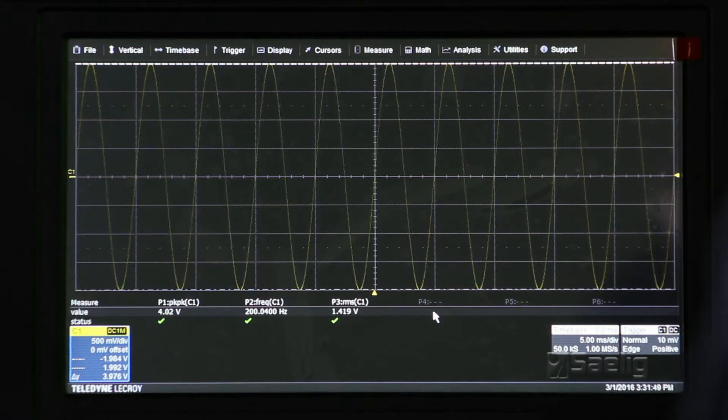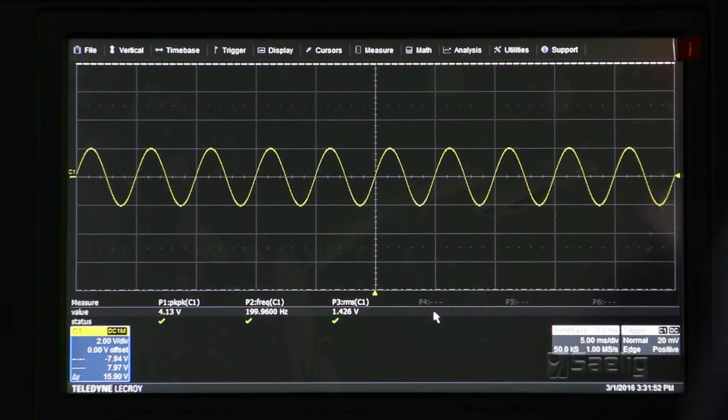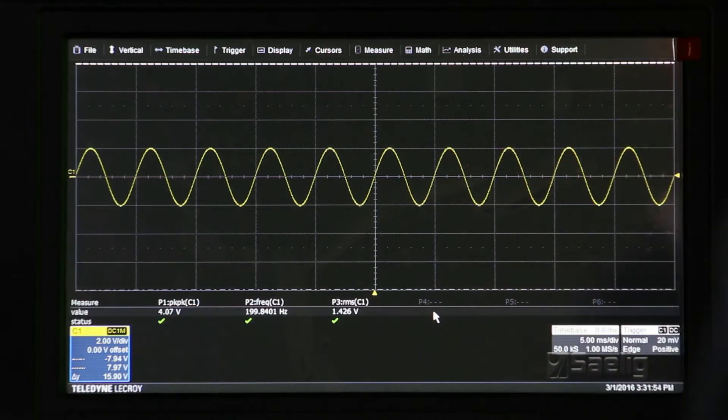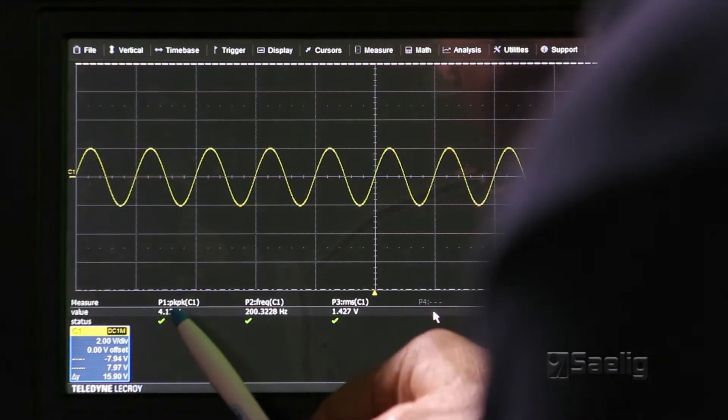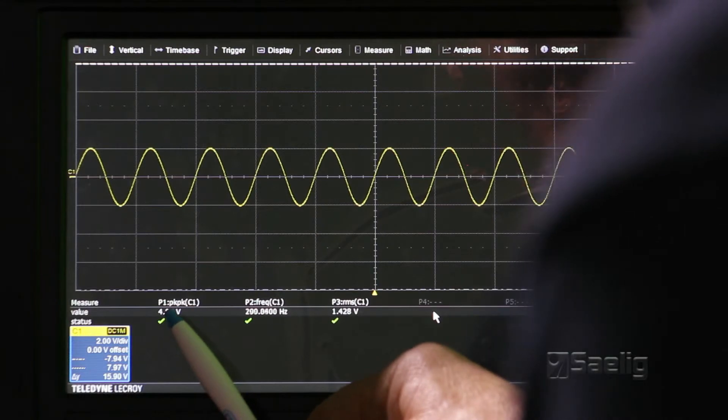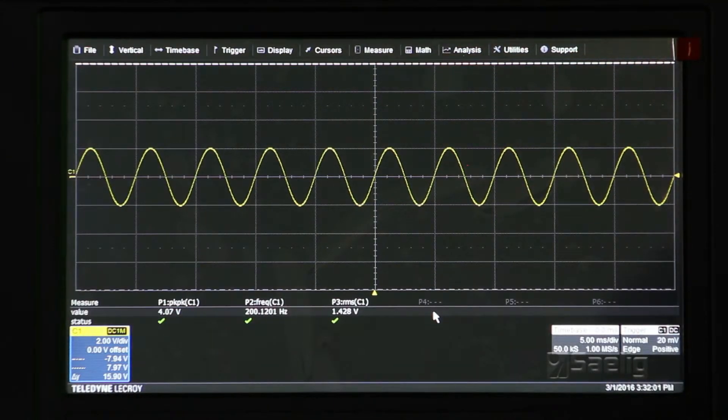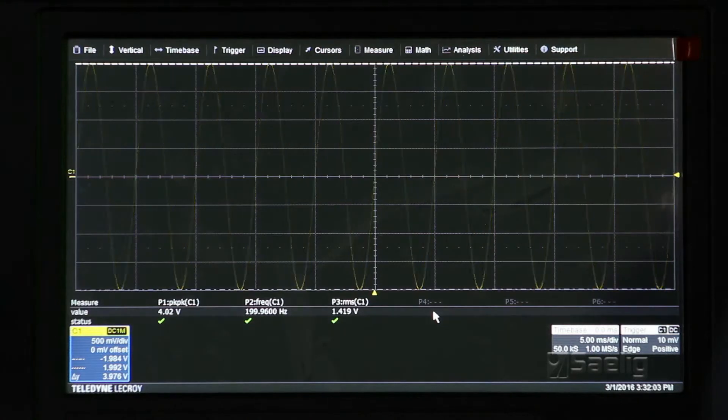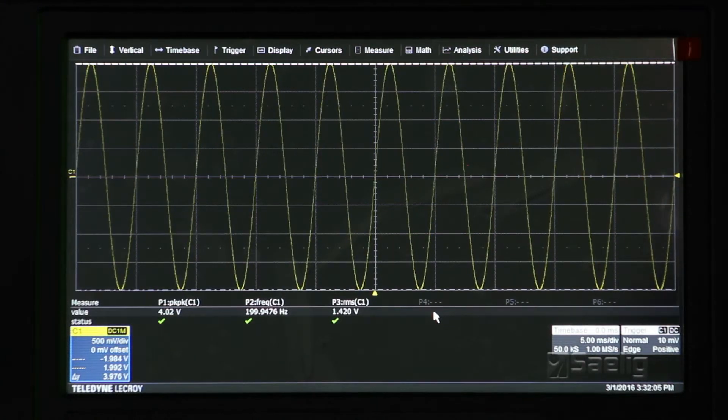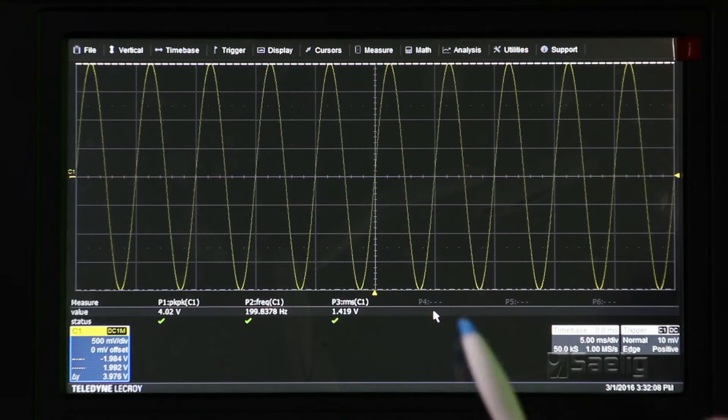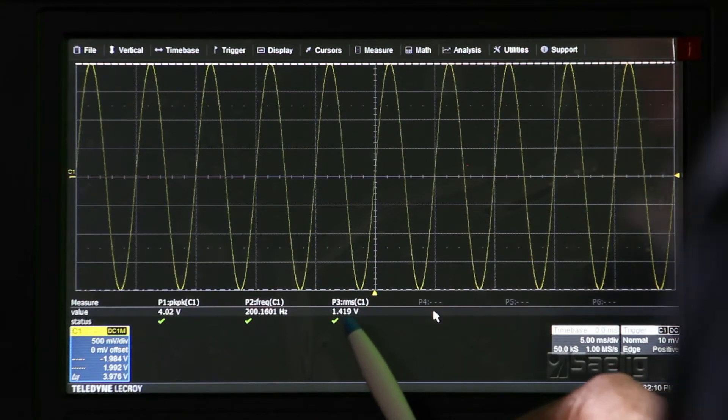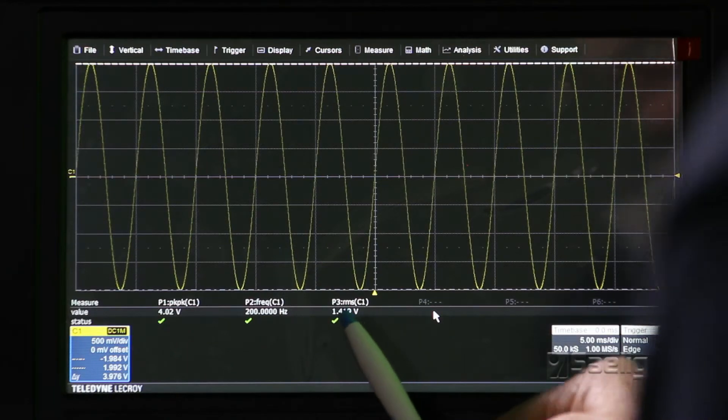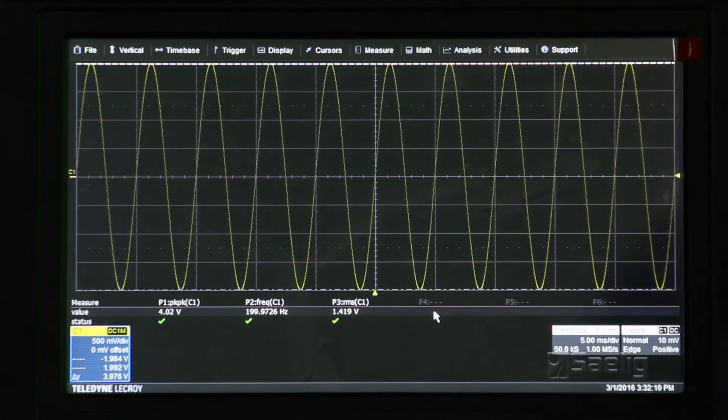If you notice that if I decrease the peak to peak or the sensitivity of the input, you notice that the measurement tends to bounce around a little bit and it becomes less accurate. So again, give the scope the biggest thing that's practicable and then it will do a better job measuring. That also is true for the RMS measurement. And if we let this settle down, it gets very close to 1.414, actually it's right at 1.419 or 1.418 volts RMS. So that's actually doing quite well.